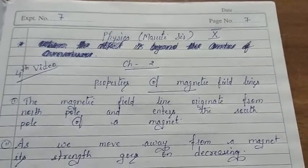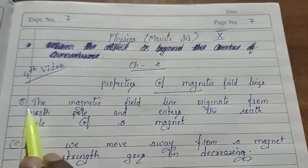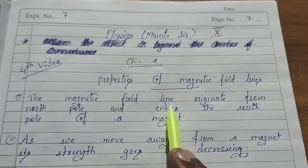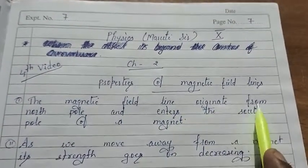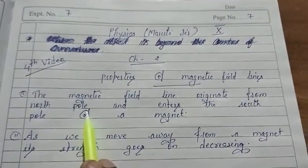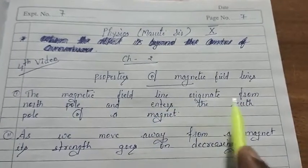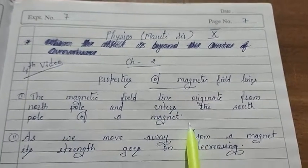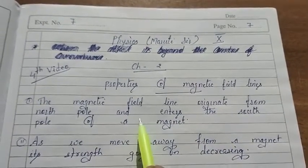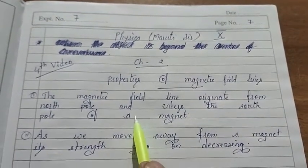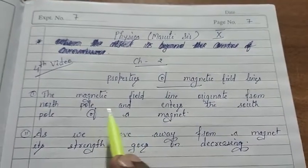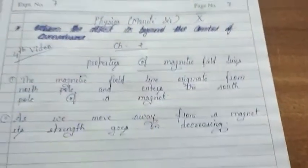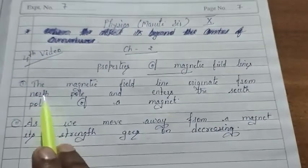First property: the magnetic field lines originate from the North pole and enter the South pole of a magnet. We have seen in the first video that magnetic field lines originate from the North pole and enter the South pole.